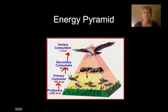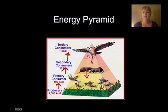Secondary consumers that are eating the primary consumers tend to eat more — they have a higher dietary intake or calorie requirement, so they have to eat more. And again, these top predators have to eat a lot more of these secondary consumers to get the energy that they need.